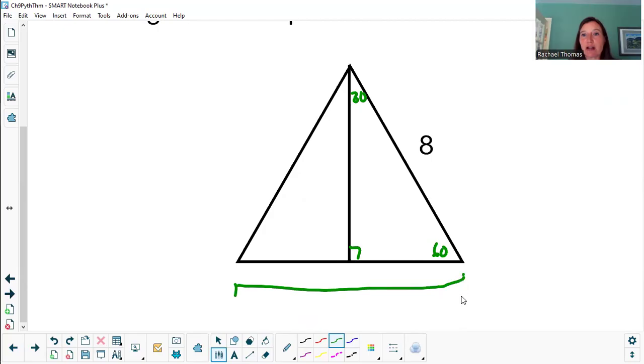Because this triangle is equilateral, this whole side down here is eight. So it is not a stretch to conclude that this much has to be four. That would be the short leg of my right triangle.